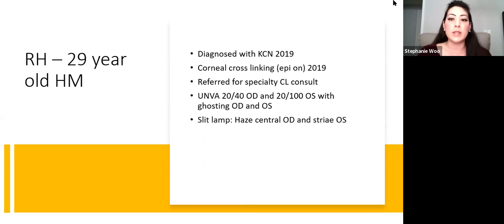When I looked with the slit lamp, he did have some haze centrally in the right eye, and he had some stria in the left eye. Very common for keratoconus patients after they have corneal cross-linking.